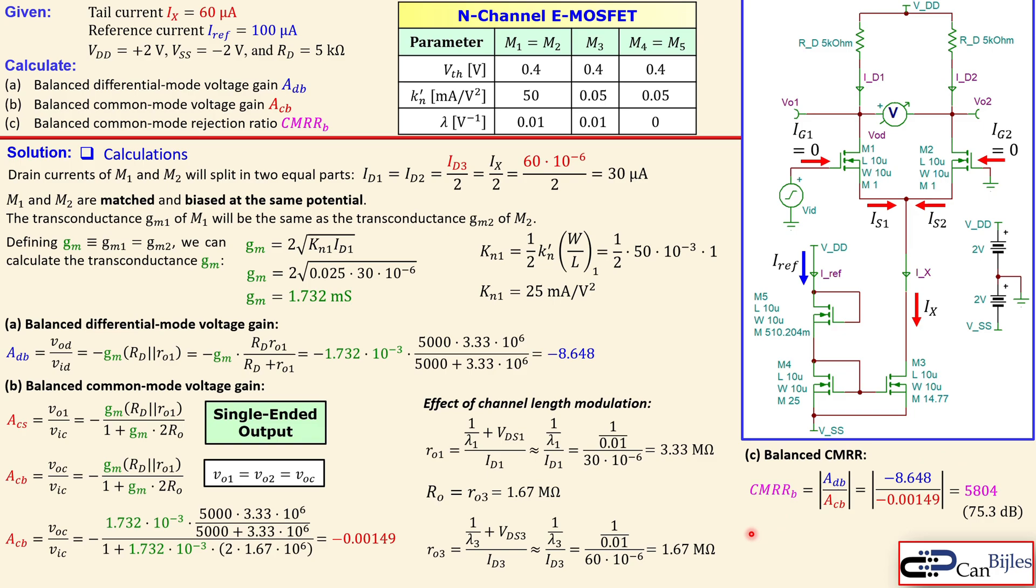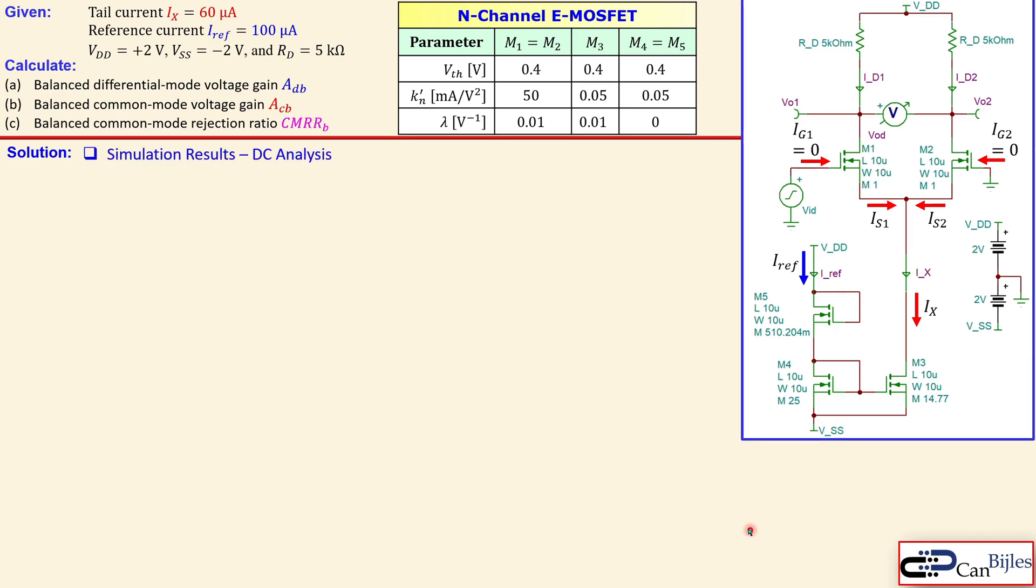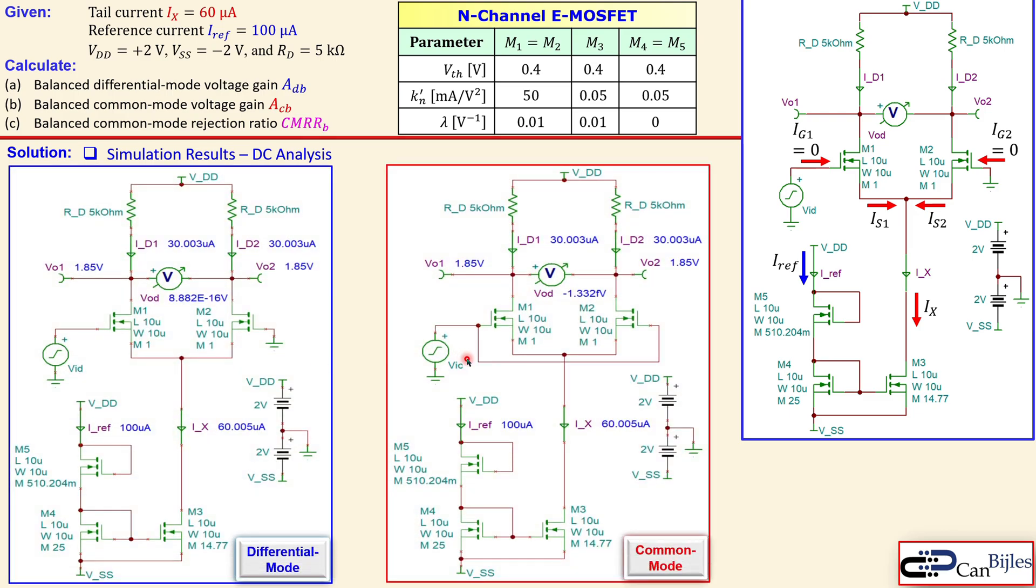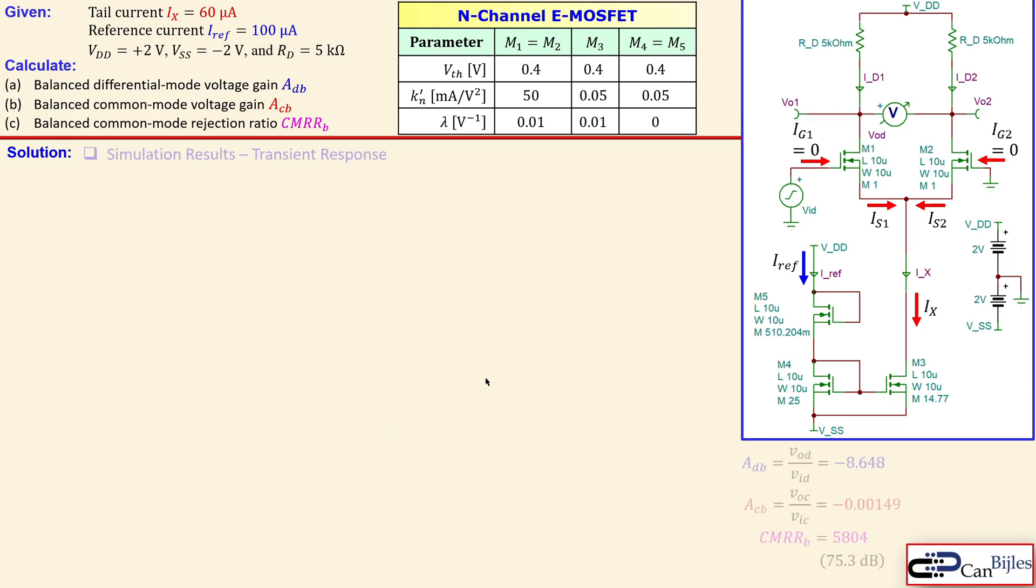Let's see the simulation results, starting with DC analysis for the differential mode circuit on the left and common mode circuit on the right. You see the common mode signal applied at the same gates of M1 and M2. In DC conditions, this is 100 microamps as we wanted, and approximately 60 microamps, close to our target. It's the same for the common mode circuit. The 60 microamps splits equally because I_D1 and I_D2 are the same, very close to 30 microamps. Similar for common mode, so this is checked.